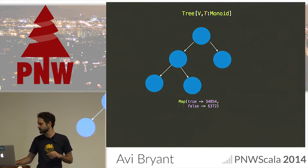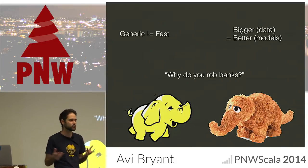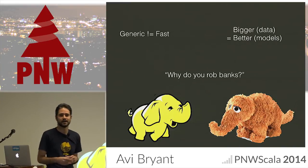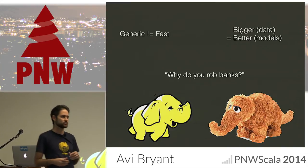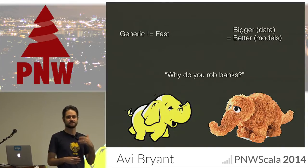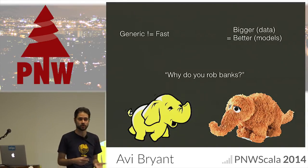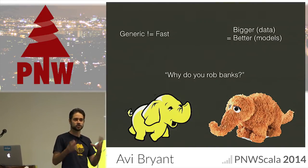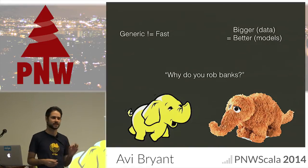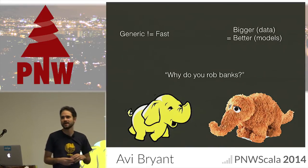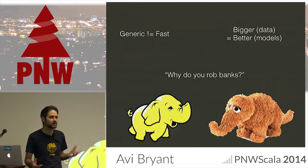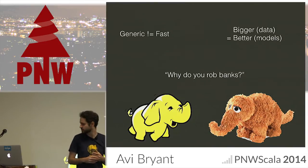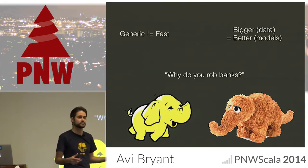I have this design constraint that it be distributed — why is that important? One reason is that because I already wanted it to be generic, it's very difficult to do a generic learner that is fast and well-optimized on a single node. You're paying a cost for the genericity. If it's not going to be particularly fast on a single node, then you want to throw a lot of compute power at it so you're not waiting forever for your models to be trained.